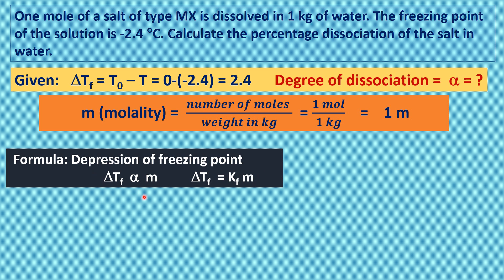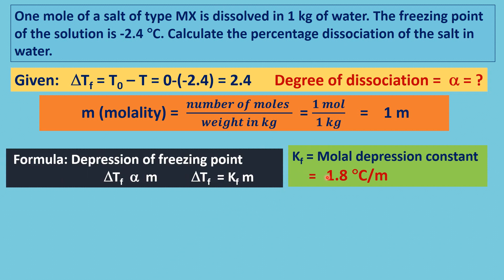Colligative properties depend on the total number of molecules present in the solution. So, delta Tf equals Kf times m, where Kf is the molal depression constant. For water, Kf is equal to 1.8 degree Celsius per molal solution. That means when molality equals 1, delta Tf equals Kf, which is 1.8 degree Celsius per molal.